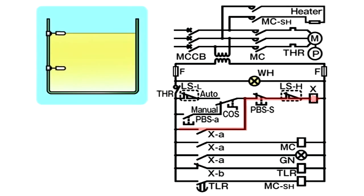If pump operation continues, the fuel oil level rises. The L-S-H float rises and the L-S-H relay turns off. When the L-S-H relay is turned off, current passing through X-A, P-B-S-B, L-S-H, and to X is cut off, and the X-coil is demagnetised. As a result, X-A turns off and X does not remain in self-holding state.